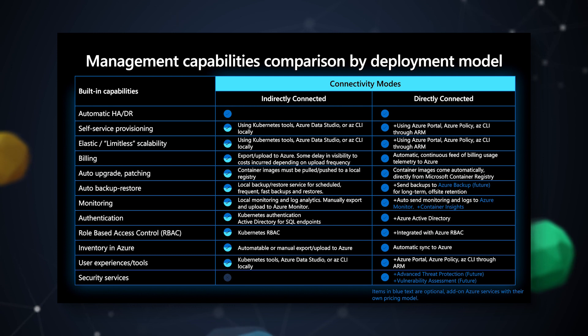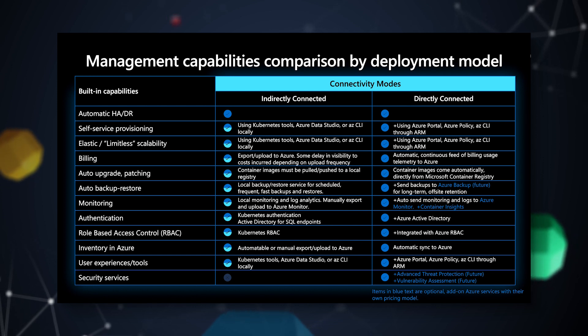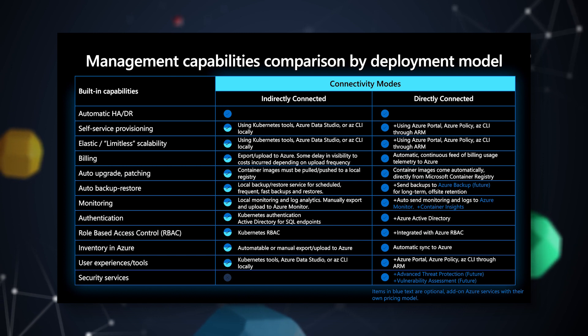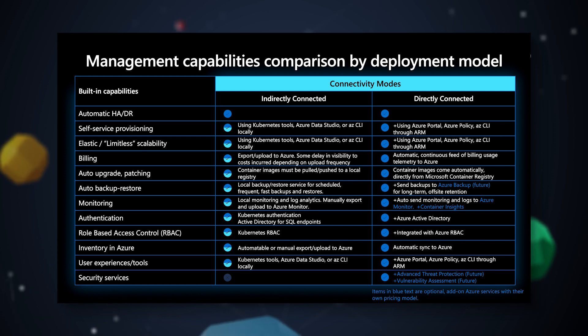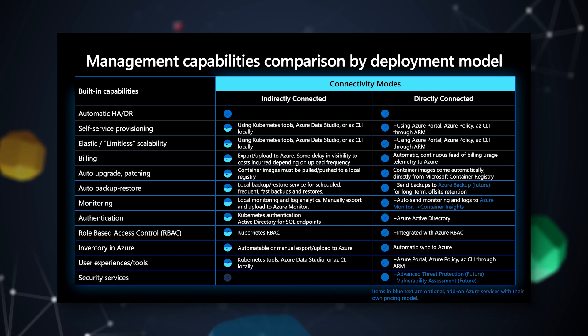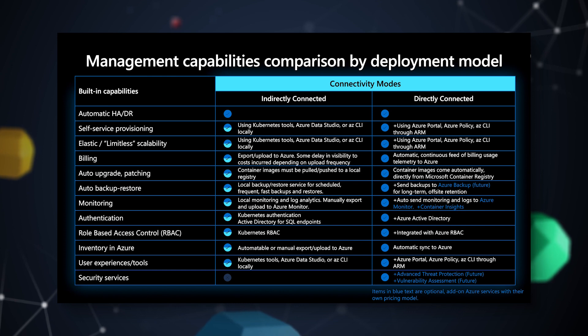What we've come up with is flexibility across two different connectivity modes — one we call indirect and the other directly connected. Let's go through the key differences in functionality between indirectly and directly connected mode, and in follow-up sessions we'll do demos to show the differences in user experience depending on the connectivity mode you choose. Let's start on the indirectly connected side to understand the features and functionality available without a direct connection to Azure, then talk about what additional things you get by being directly connected.